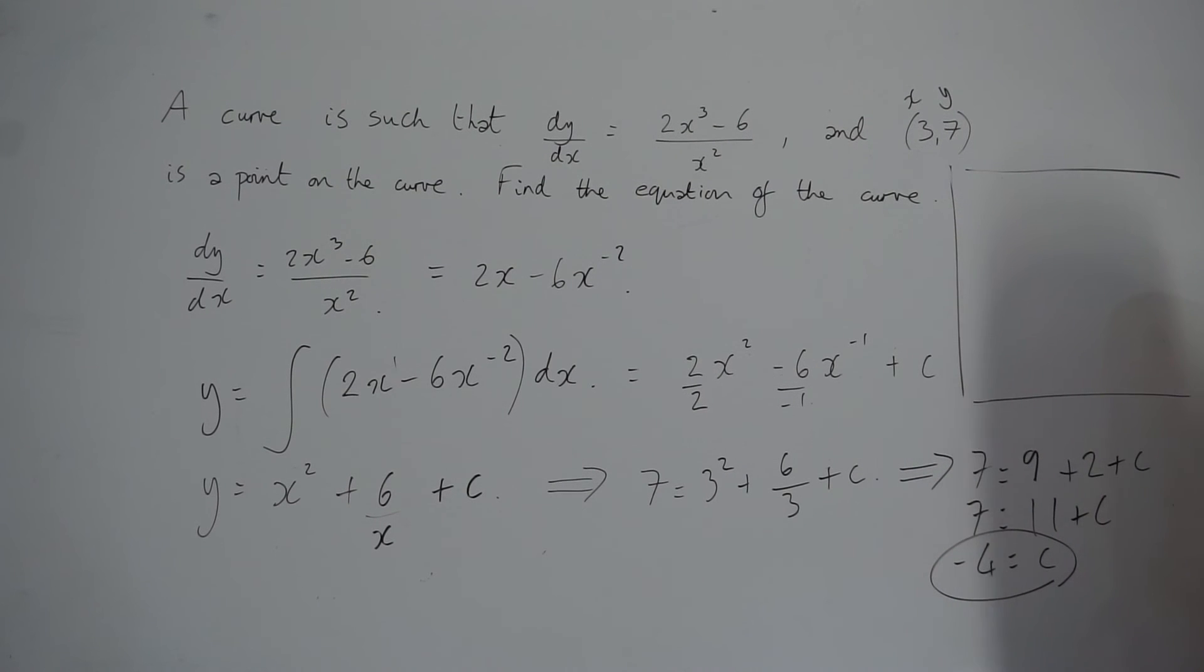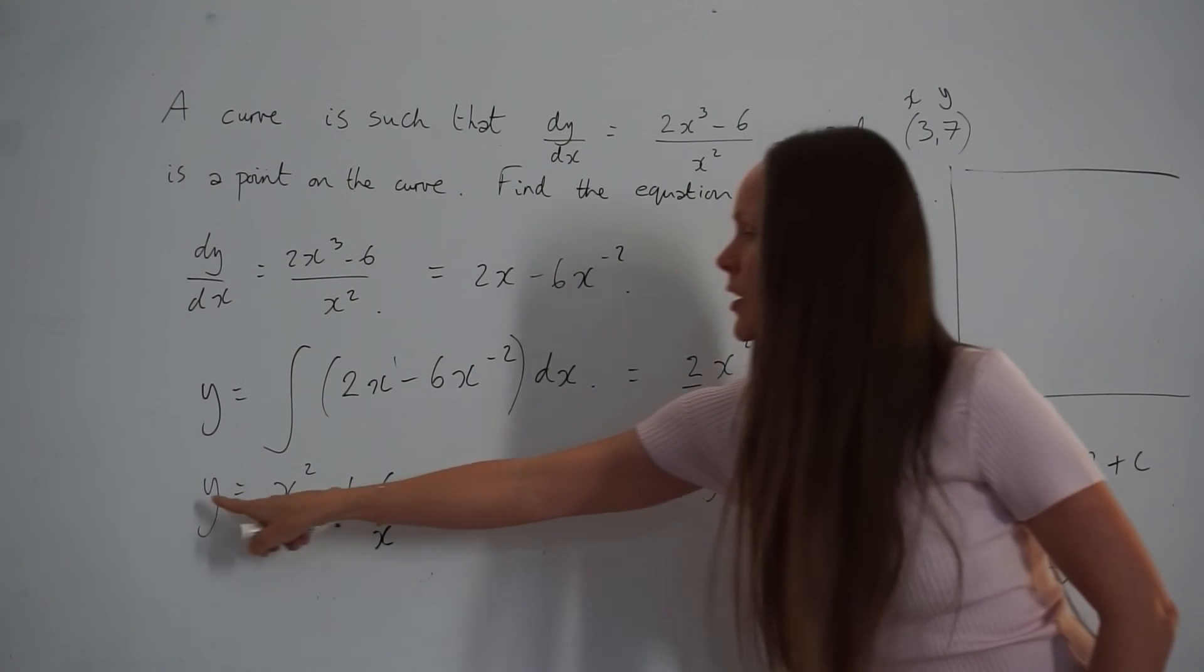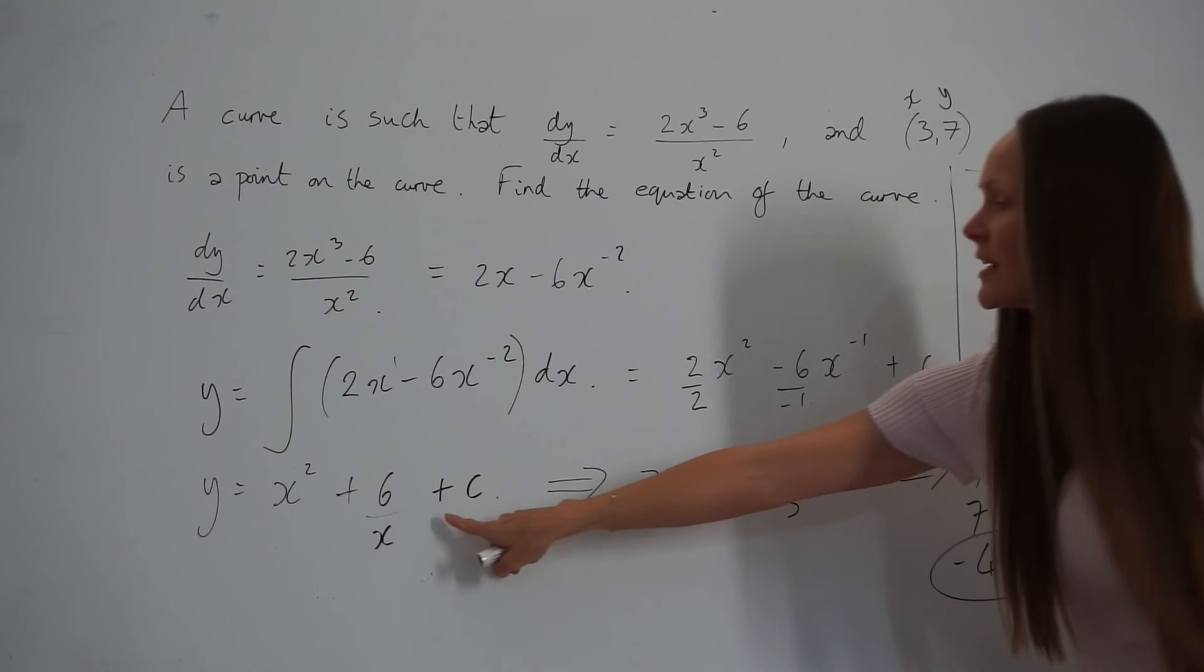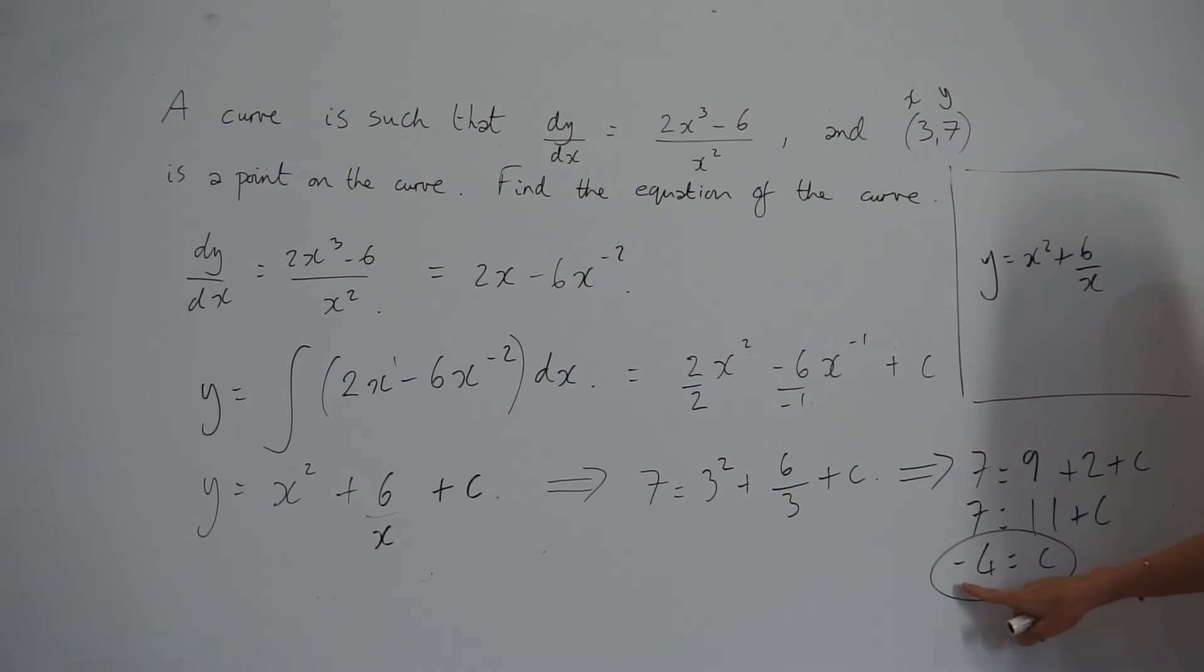The equation of the curve is y equals x² plus 6 over x, and instead of plus c, we can now write minus 4, as that was the constant of integration. So there is the equation of the curve.